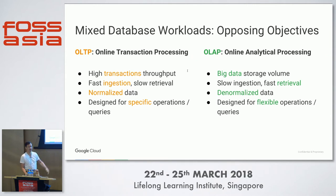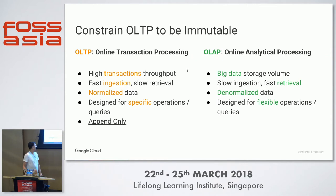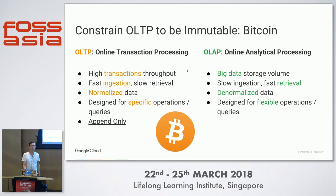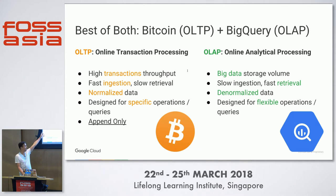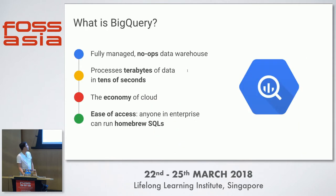OLAP systems are designed for flexible operations. If we add another constraint — that it's append-only — that basically describes Bitcoin or blockchain type systems, with the exception that they're not particularly fast. BigQuery is Google's product for doing OLAP. If you want both transactional append handling and good analytics processing, you need two different systems to support both workloads — that's the motivation for preparing the dataset I'm talking about today.